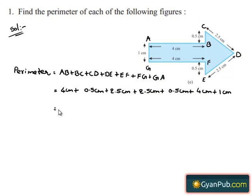This is equal to 4 plus 0.5 plus 2.5 plus 2.5 plus 0.5 plus 4 plus 1 cm. This equals 2.5 plus 2.5 plus 2.5 plus 0.5 plus 0.5 gives 10 cm plus 4 plus 4 gives 8 cm, totaling 14 cm plus 1 cm gives 15 cm.